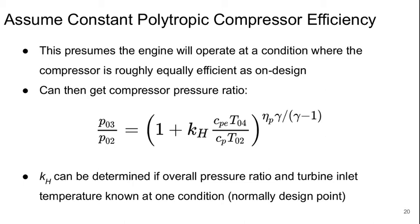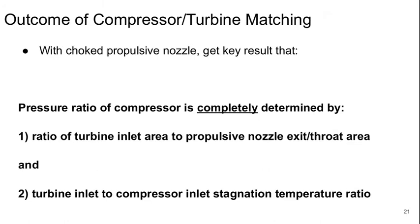If we assume constant polytropic compressor efficiency, we're assuming we're not operating so far off design that the compressor is losing a lot of efficiency. We can then very simply get the compressor pressure ratio by raising the temperature ratio expression to the appropriate power. KH can be determined if the overall pressure ratio and turbine inlet temperature are known at one operating condition, which would normally be the design point. The key result is that if the propulsive nozzle is choked, the compressor pressure ratio is completely determined by the ratio of the turbine inlet area to the propulsive nozzle exit area or throat, and the turbine inlet to compressor inlet temperature ratio T04 over T02. These two things uniquely determine the compressor pressure ratio — there's nothing else that contributes.